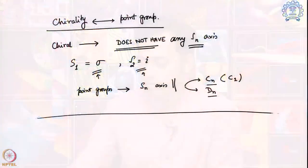With that covered, today we are going to look at three different molecular structures and find out how they become chiral.